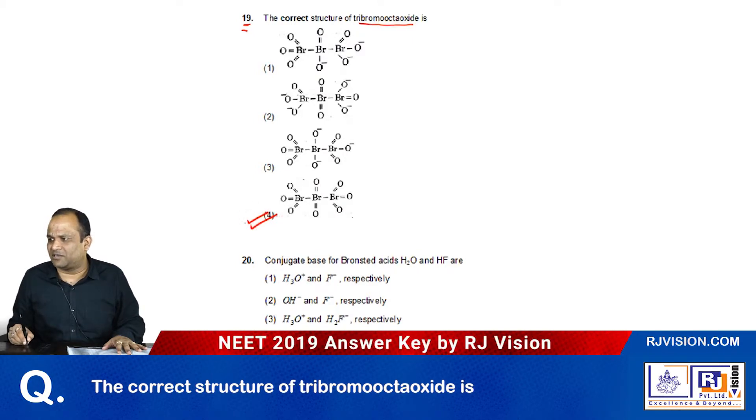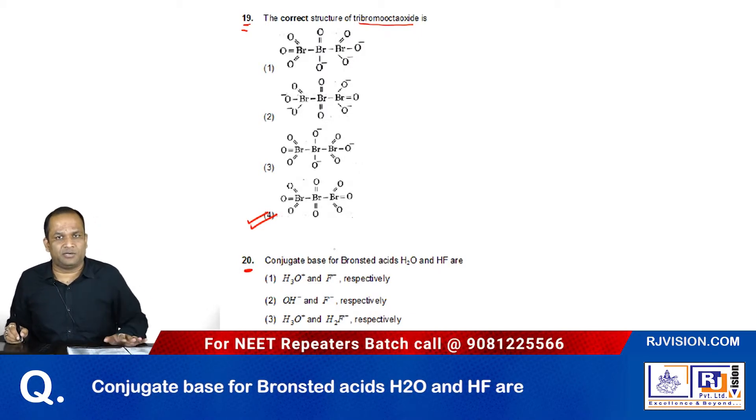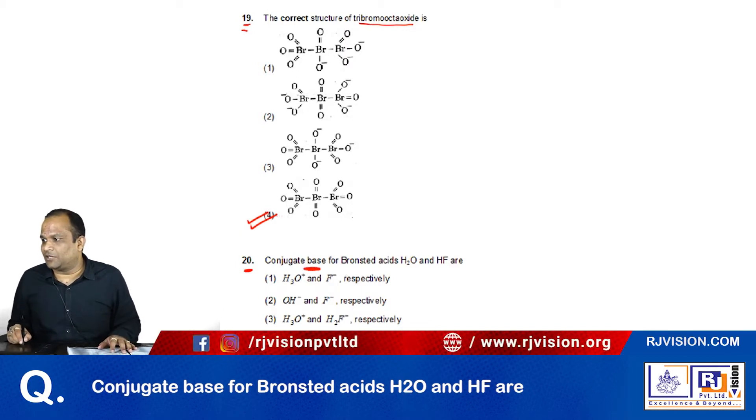So the answer is 4. Now question number 20 is from the ionic equilibrium chapter. Here we have to find out the conjugate base of Bronsted acids H2O and HF.